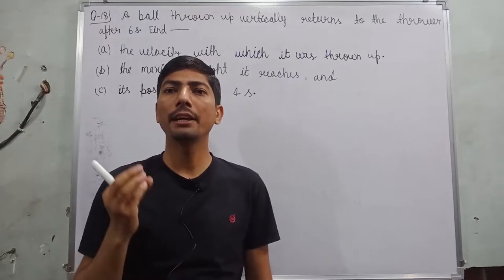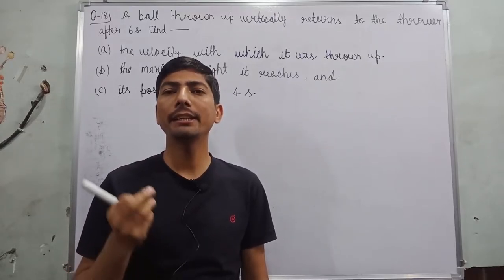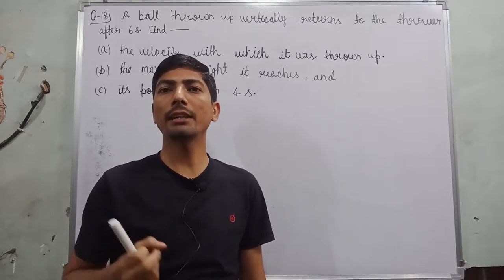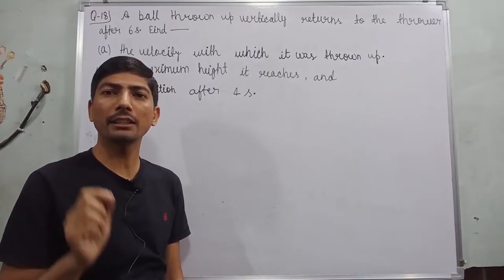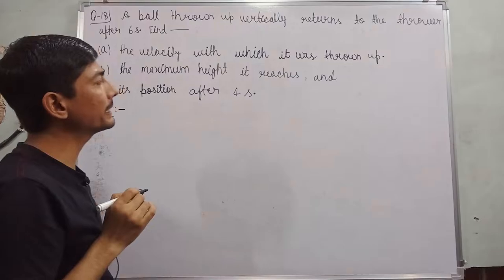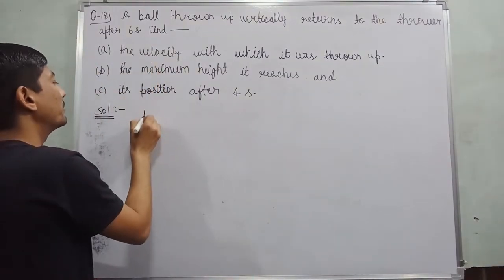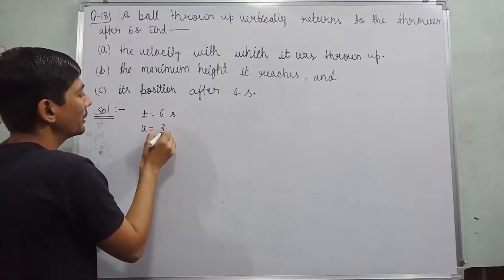in this question. First one is initial velocity, second one is maximum height, and third word is position after four seconds. Before going to start these questions, I request you to please watch the entire video solution. So first I write what is given. The given is time t is equal to 6 seconds and you need to find out